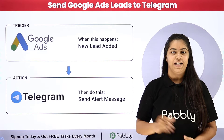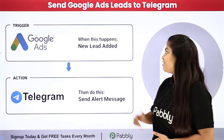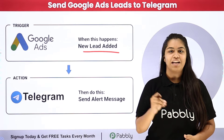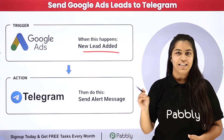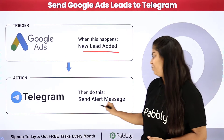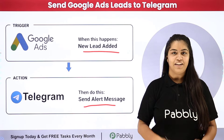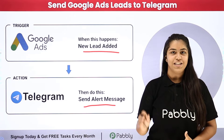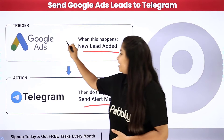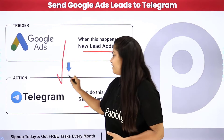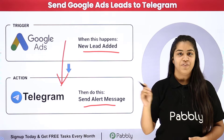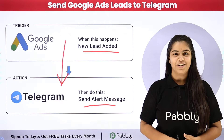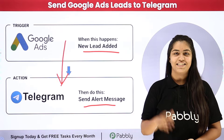The objective of today's video is that as soon as a new lead is received in our Google Ads, automatically a Telegram message should be sent to my team, notifying them that we have received a new lead. For this we are going to create a connection between Google Ads and Telegram using Pably Connect, without knowing any programming or coding language.